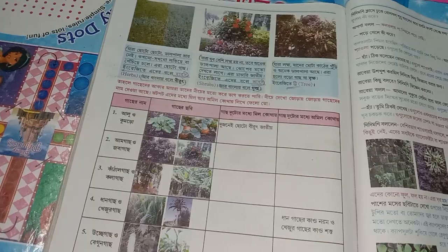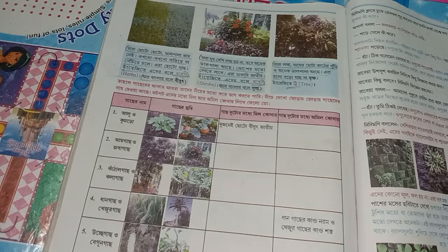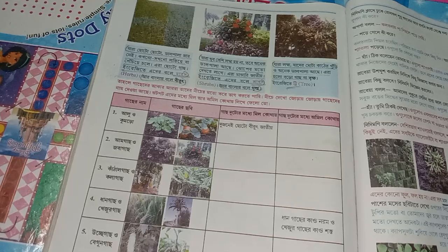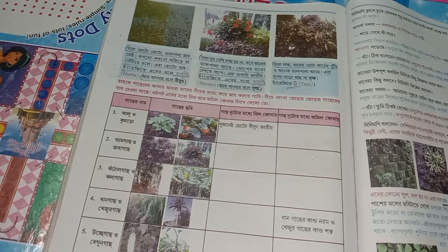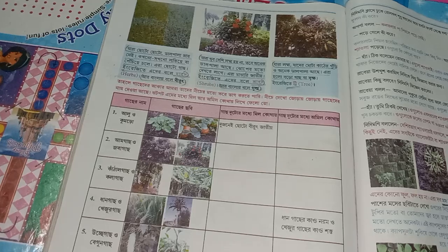Small small leaves are called Herbs. When you have a small little plant, you have a little leaf — this type of small plant is called Herbs in English. This is very important for plants.